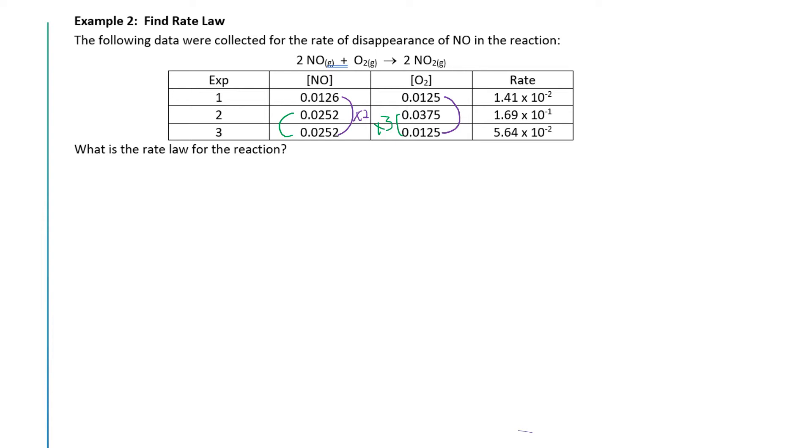Remember that when we write the rate law for the reaction, we're going to say that the rate is equal to a constant k (that's a lowercase k) times NO raised to some power m, and times O2 raised to some different power n. When we solve this problem, we're looking for actual numbers for k, m, and n.